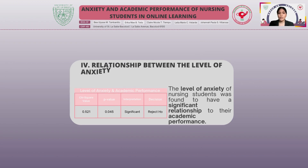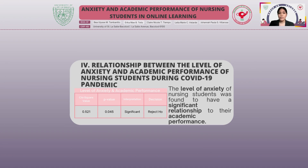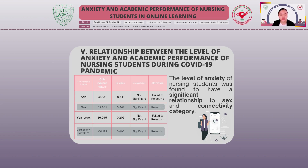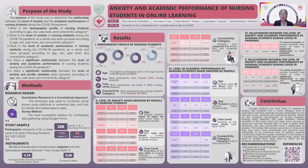The level of anxiety of nursing students was found to have a significant relationship to their academic performance, based on their GPA with a chi-square value of 0.521 and a p-value of 0.045, meaning the null hypothesis was rejected. The results suggest that students' anxiety affects their academic performance, implying that the emotional and psychological state affects how they perform in school. Anxiety also had a significant relationship to sex with a chi-square value of 38.131 and p-value of 0.047, and to connectivity category with a chi-square value of 100.172 and p-value of 0.002. Regardless of sex and year level, students still experience anxiety.